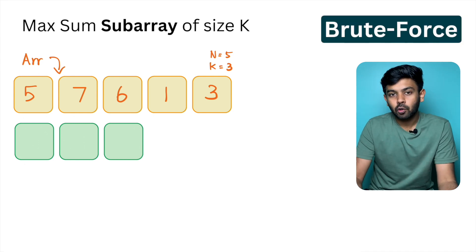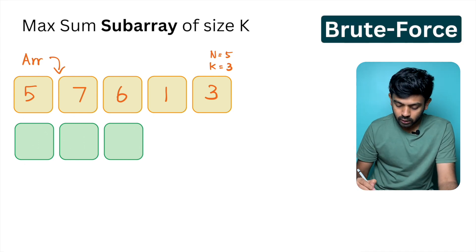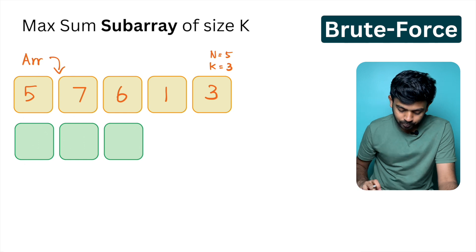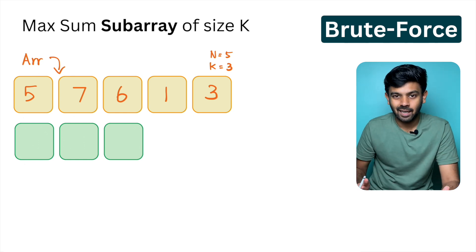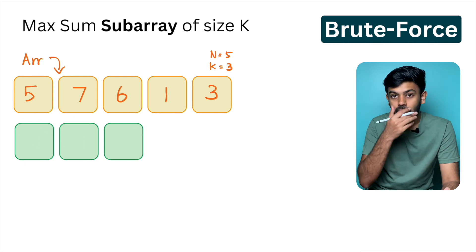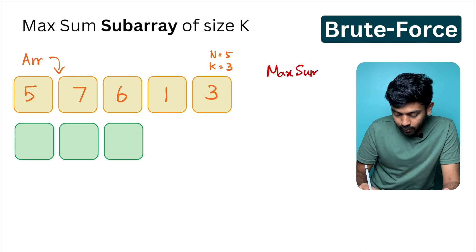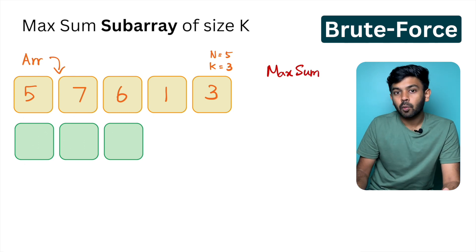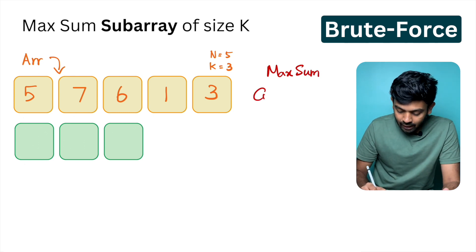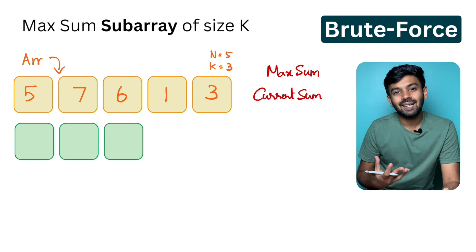If you look at the brute force approach, you can compute all possible subarrays and their sums. First, let's declare two variables: one is the max sum, which is the return variable, and one is the current sum, which tracks the current subarray sum.